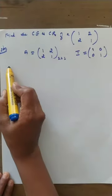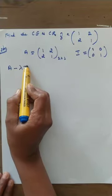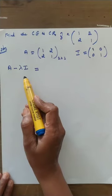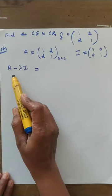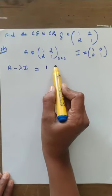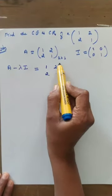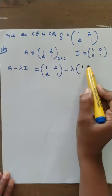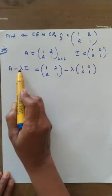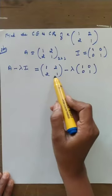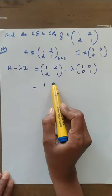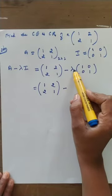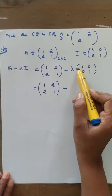Find the characteristic matrix using the formula A minus lambda I. So we have matrix A = [1, 2; 2, 1] minus lambda times identity matrix [1, 0; 0, 1]. Before subtracting, first compute lambda times I.